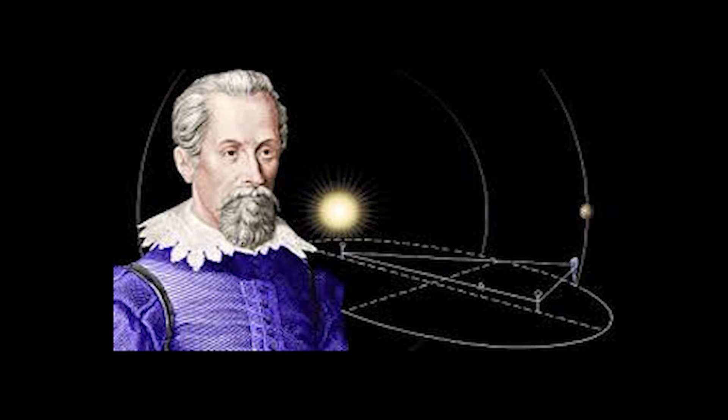Kepler also believed in the Copernican theory and set out to prove it. This is where his fascination for astronomy sparked. Kepler made many discoveries throughout his lifetime, but his greatest contribution to science was his laws of planetary motion. His laws can be broken down into three empirical relationships that describe the motion of planets.